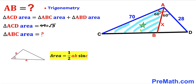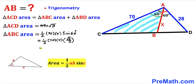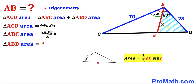Now let's focus on triangle ABC and calculate its area using the same formula. This time our side lengths are 70 and x, and the angle between them is 60 degrees. So Area(ABC) = ½ × 70 × x × sin(60°). Since sin(60°) = √3/2, this simplifies to 35√3/2 × x.